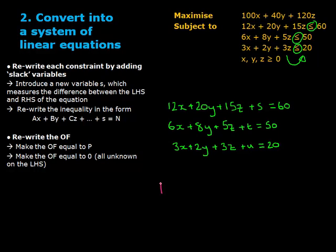We also have to rewrite the objective function. First, we set it equal to p, which represents the optimal value. We then set the whole equation equal to 0, moving all unknowns to one side of the equation, making sure that p is still positive.